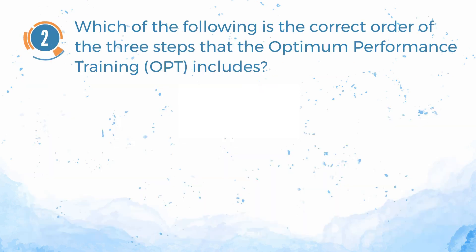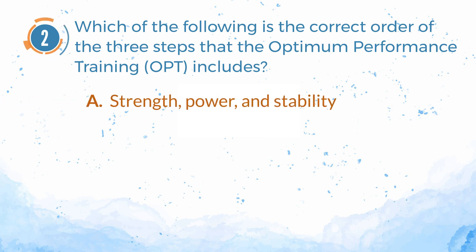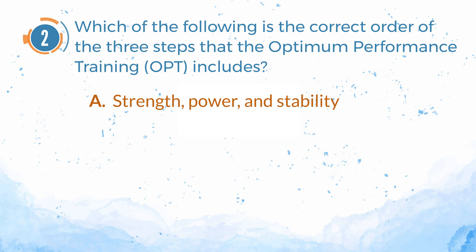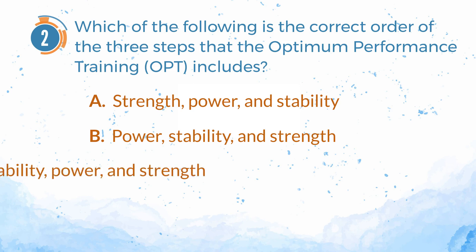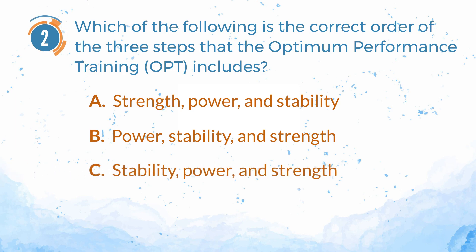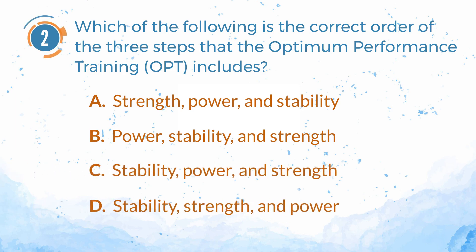Number 2. Which of the following is the correct order of the three steps that the Optimum Performance Training includes? A. Strength, Power, and Stability. B. Power, Stability, and Strength. C. Stability, Power, and Strength. D. Stability, Strength, and Power.